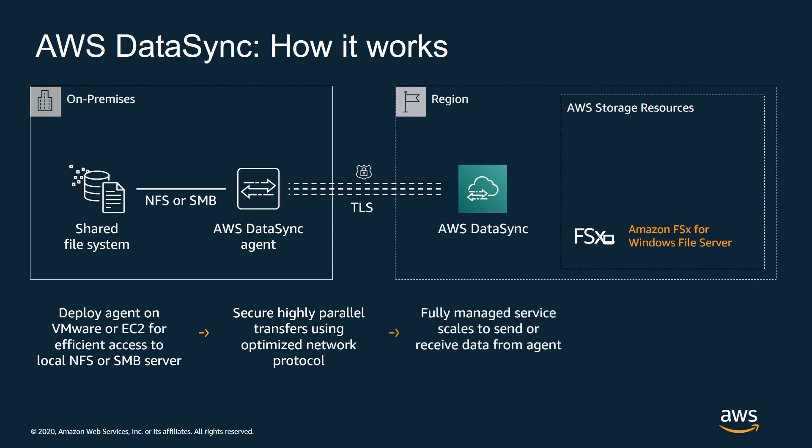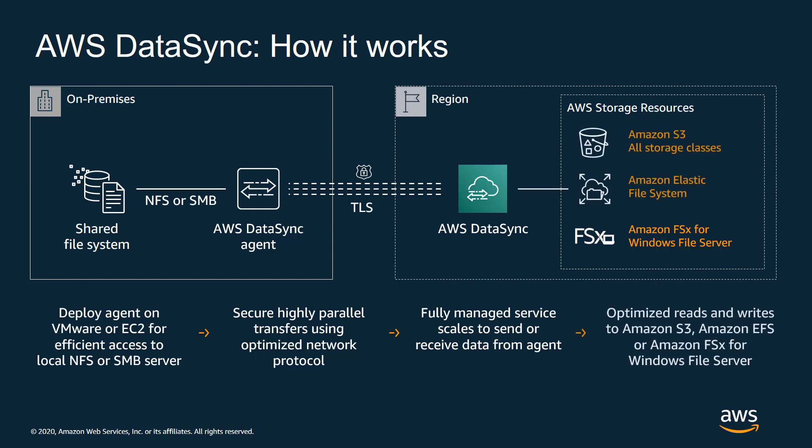On the backend, we'll configure the AWS DataSync service to copy the data into Amazon FSx Windows File Server. Note that AWS DataSync can also use as a destination Amazon S3 or Amazon Elastic File System, or EFS.